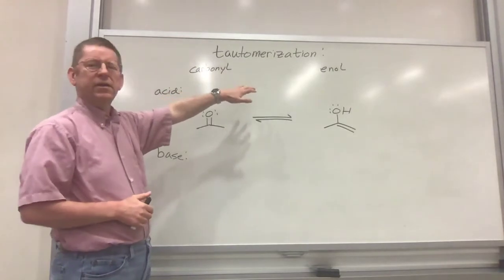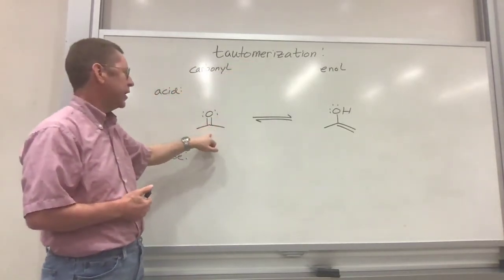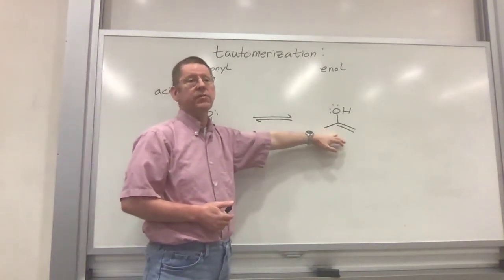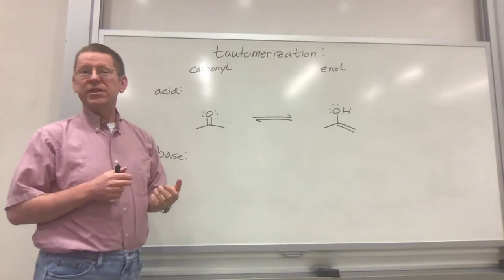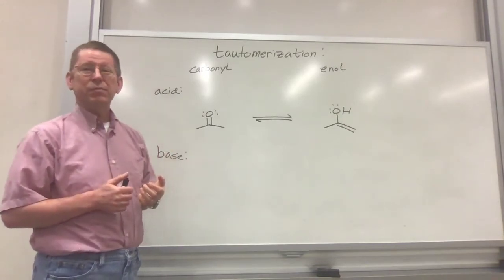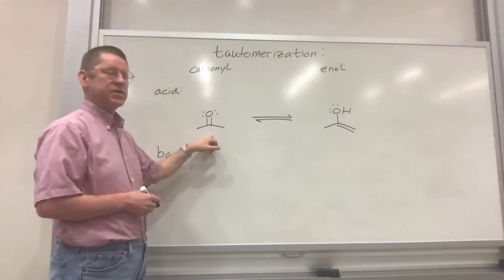Now, let's look at enols and in particular talk about how we get from a carbonyl form to an enol form. This process of tautomerization. You've seen this before at least a couple of times, but it's been a while. So let's go back and look at this again.